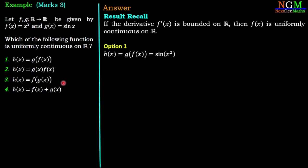First option: h(x) = g(f(x)). f(x) = x² so g(x²) = sin(x²). h'(x) = 2x cos(x²). One can easily prove that h'(x) is not bounded on R.